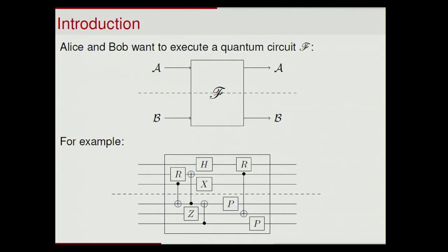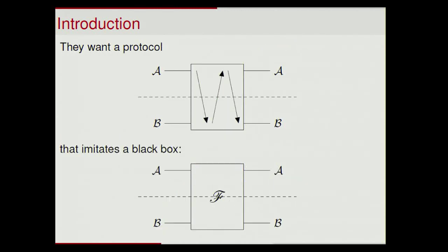So what are we doing here? We're doing two-party computation. Suppose Alice and Bob have some quantum circuit in mind that they would like to execute. Alice has some qubits, Bob has some qubits as well, and they have a joint circuit that they would like to execute securely. They want a protocol — sending classical or quantum messages back and forth — that essentially imitates a black box, a magic box that does exactly that circuit and doesn't leak anything.